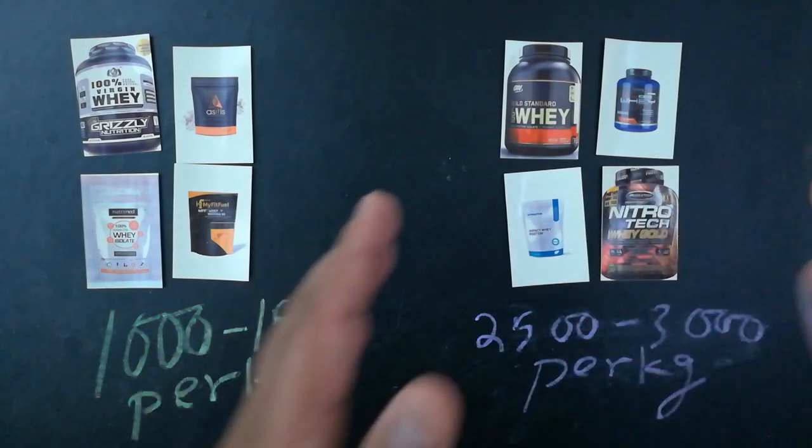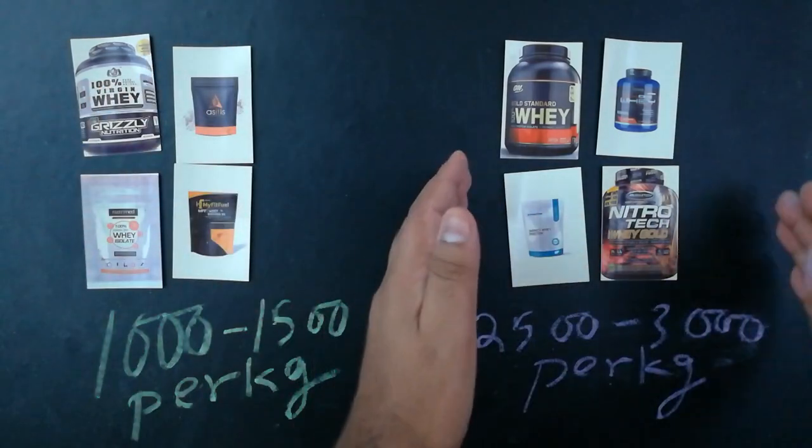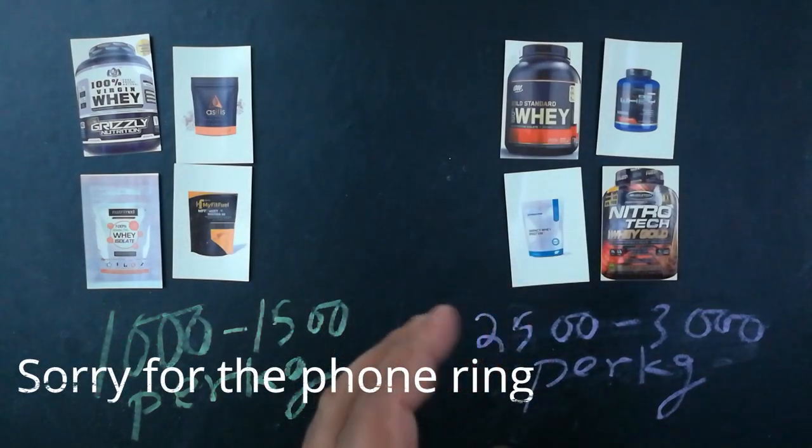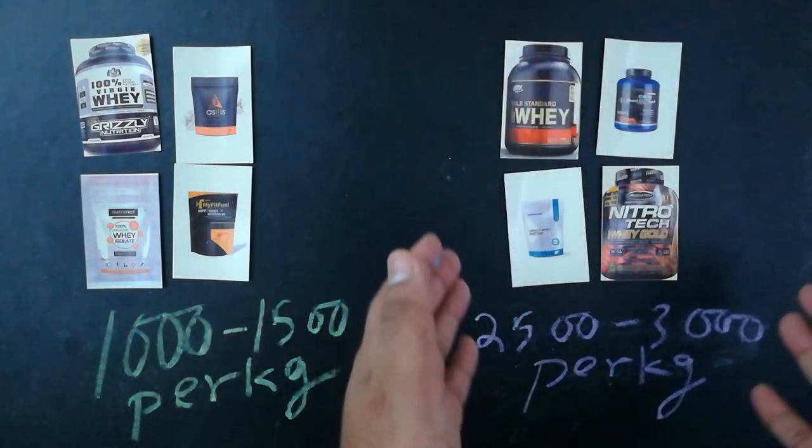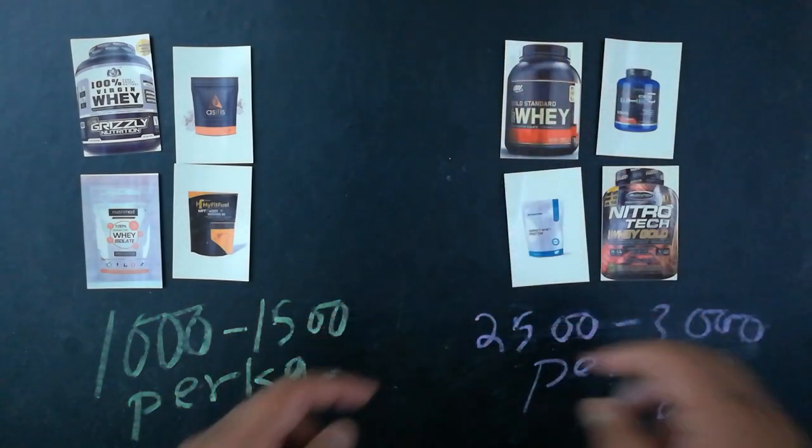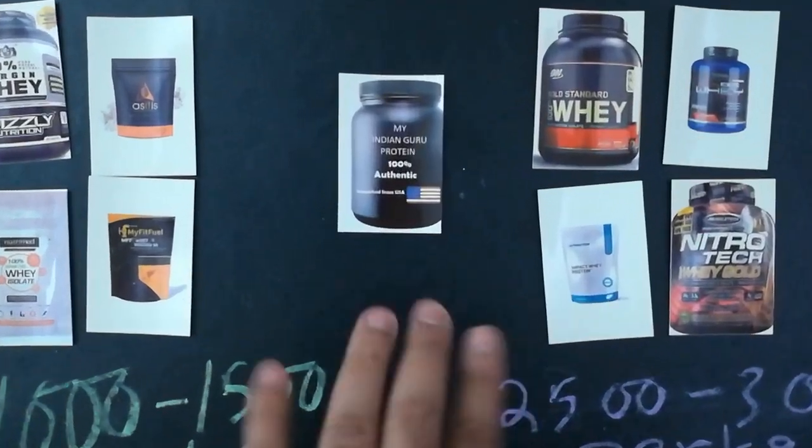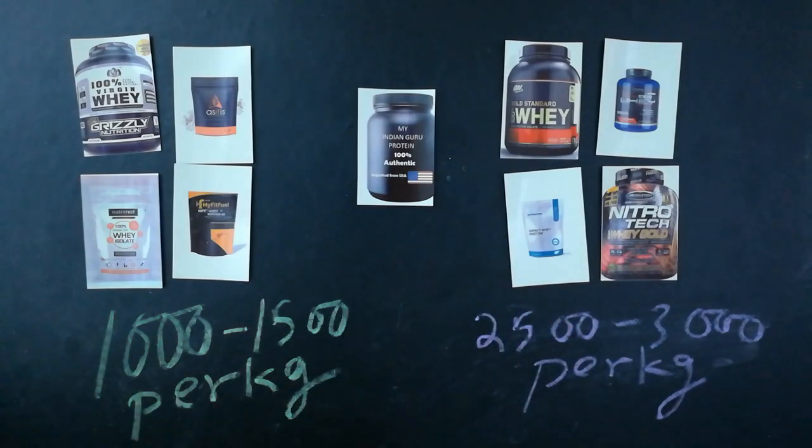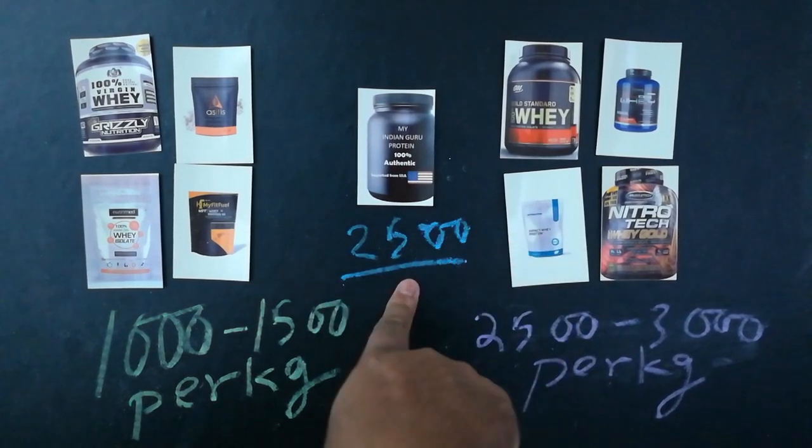If you look at international brands, even though they've suppressed their prices because of these Indian brands coming into the picture, they still sell about 2,500 to 3,000 rupees per kg minimum. Some fancy brands like Jim Stoppani's are even more costly. If you target this specific group and don't even talk about the Indian brands as if they don't exist, then this becomes your market.